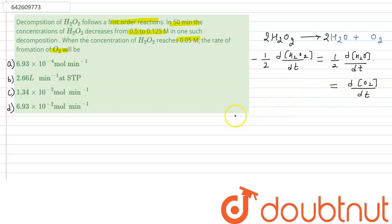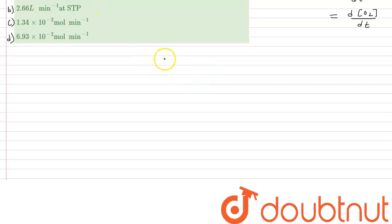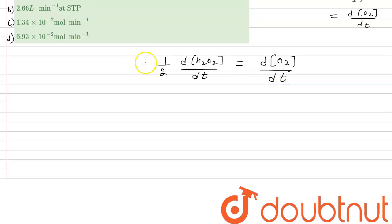We can relate: one-half times the rate of change of [H₂O₂] with respect to time equals the rate of formation of O₂. The negative sign just indicates that H₂O₂ is decreasing (decomposing) over time, while the O₂ term represents the rate of formation of O₂. So if we find d[H₂O₂]/dt at 0.05 molar, we can easily find the rate of formation of O₂.